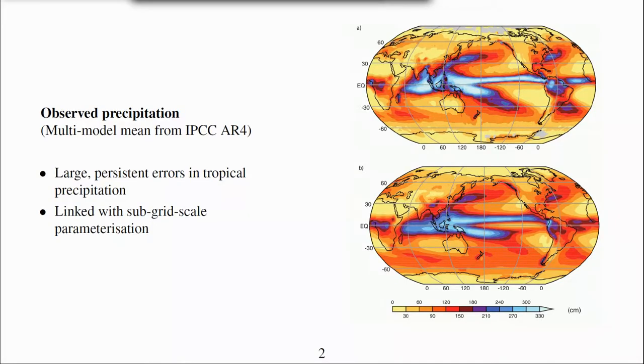There are large persistent errors in modelled precipitation in the tropics. The top plot shows observed precipitation and the bottom plot is a multi-model mean from the IPCC AR4 report. Many of the errors are consistent between models and they have been linked with subgrid scale parameterisation of convection.